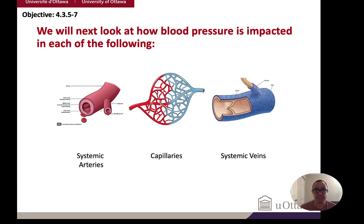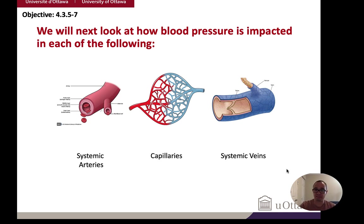We're going to look at the players involved in regulating blood pressure in the systemic arteries — mostly the muscular arteries and the arterioles. We'll also talk about how pressure impacts movement through capillaries, and for the systemic veins we'll focus on adaptations such as valves, which allow blood to move in one direction even at very low pressure.